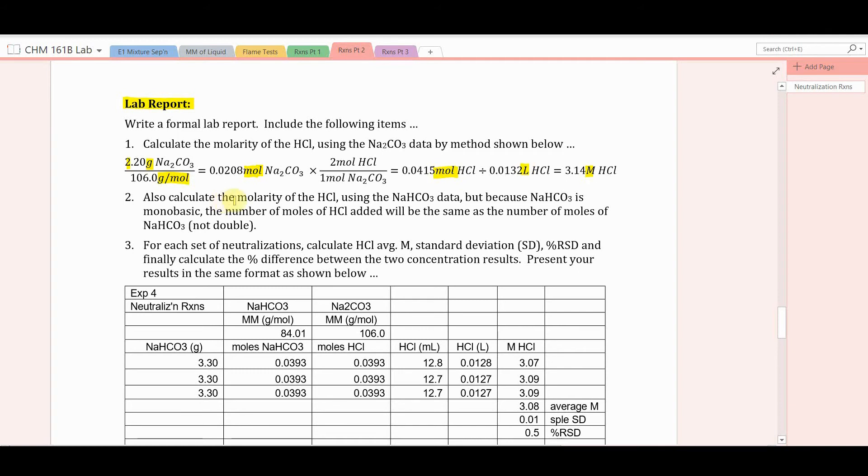Then calculate the molarity of the HCl using the sodium bicarbonate data as well. But because sodium bicarbonate is monobasic, then the number of moles of HCl added will be the same as the number of moles of sodium bicarbonate, not double. The same calculation, but in this step you'd simply have one mole of HCl per one mole of sodium bicarbonate. So the number of moles of sodium bicarbonate will be the same as the number of moles of HCl.